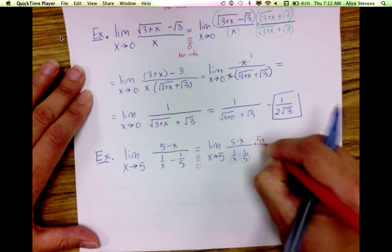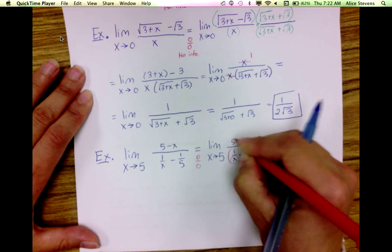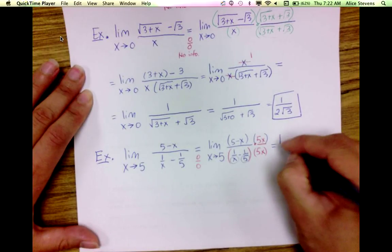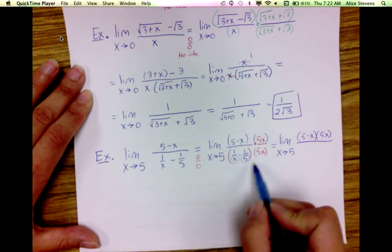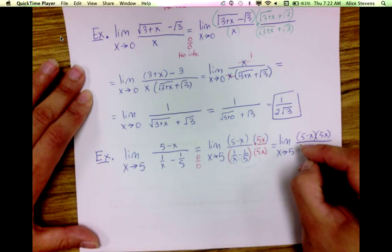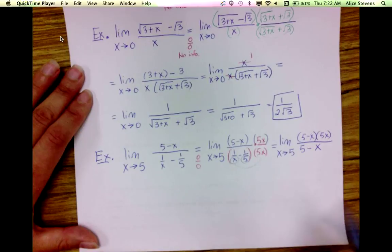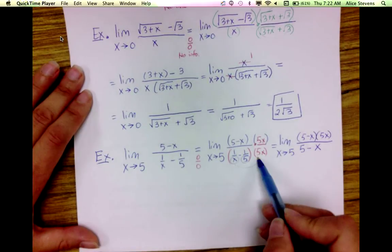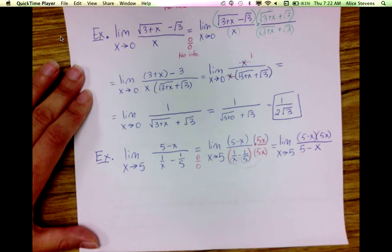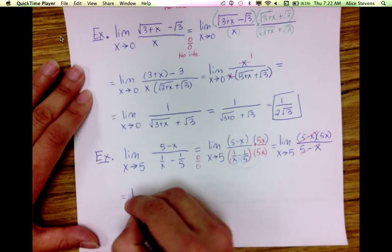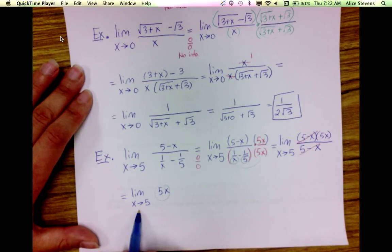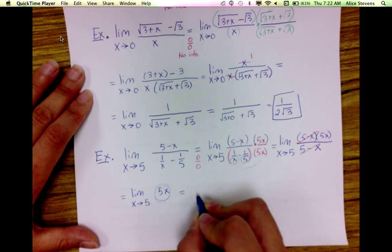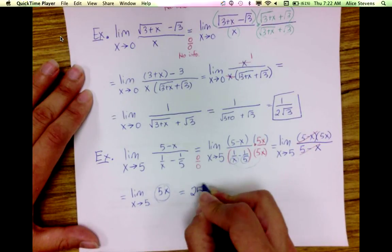So we're going to multiply by 5x over 5x. This gives me (5 minus x) times 5x, and then 5x times 1/x. Assuming x is not equal to 0, I can cancel those two factors. I end up with the limit of a simplified function, which should be the same as the limit of my original function. This is just a polynomial — just a line — so I can use the direct substitution property, and I get 5 times 5, which is 25 as my limit.